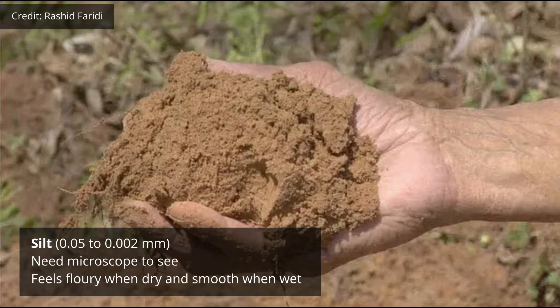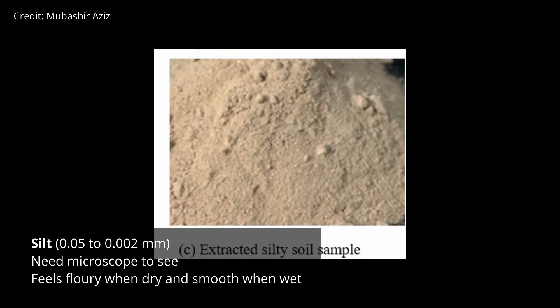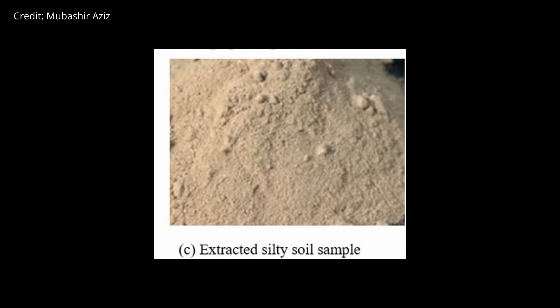Silt particles are smaller and range from 0.05 to 0.002 millimeters. You're not going to be able to see them without a microscope. When they're dry they will feel smooth and flour-like but you're probably not feeling individual grains. And when it's wet it's not going to feel sticky but it'll feel smooth.